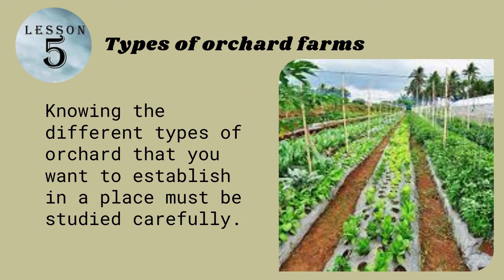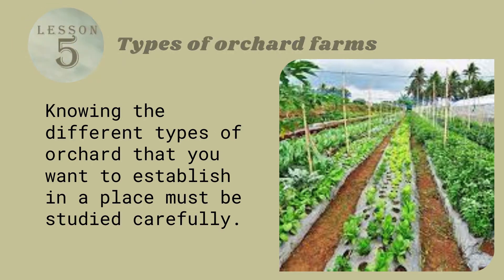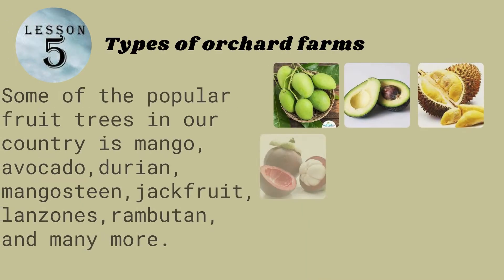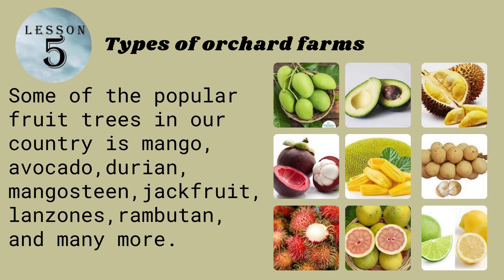Knowing the different types of orchard that you want to establish in a place must be studied carefully. This lesson focuses on the following orchards. Number one: fruit orchards include any facility that focuses on fruit-bearing trees, and it is the most common type of orchard. Some of the popular fruit trees in our country are mango, avocado, durian, mangosteen, jackfruit, lanzones, and many more.